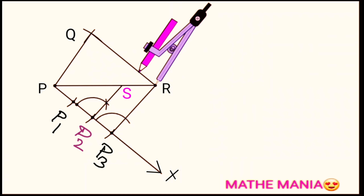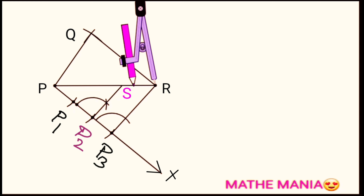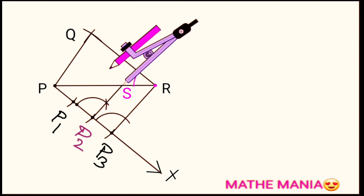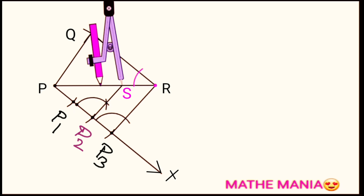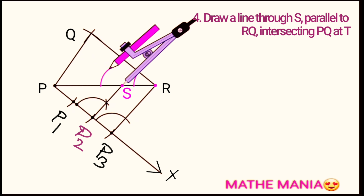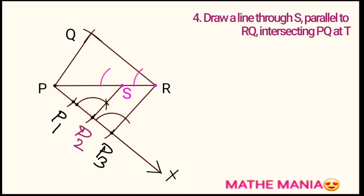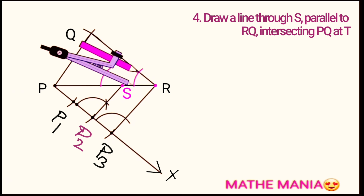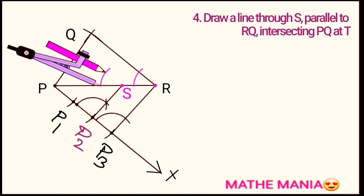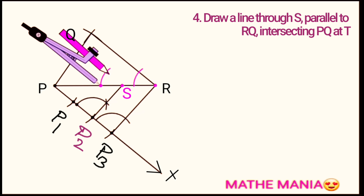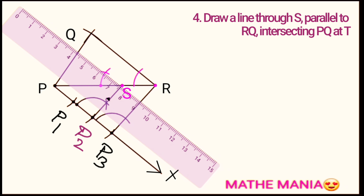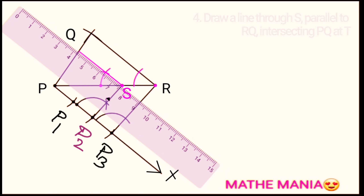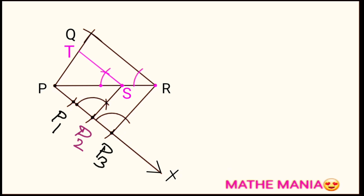Point S divides line segment PR such that PS/PR = 2/3, so PS forms the base of the new triangle. To complete the triangle, draw a line through S parallel to QR. Take a small radius with center R, draw an arc intersecting the arms of angle PRQ; with the same radius centered at S, draw another long arc. Measure the arc with the compass tips and cut an arc from the endpoint of the second arc. Join the intersection of the two arcs with point S and extend the line to meet PQ at point T. Triangle PTS is similar to the given triangle.